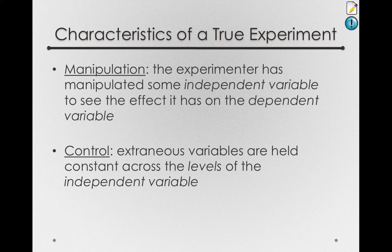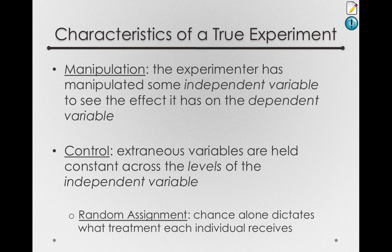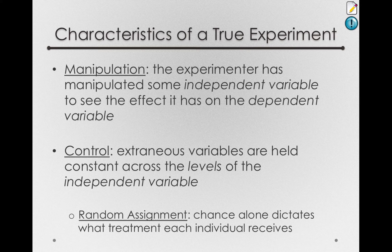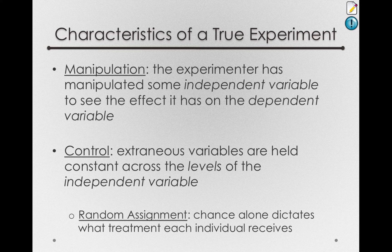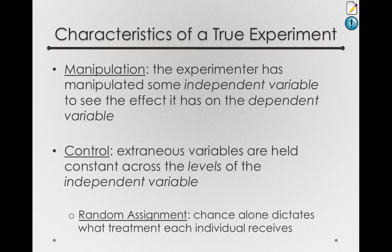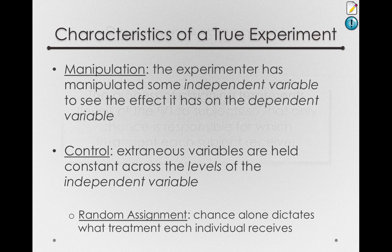For true experiments, the main way of doing this is through random assignment. Random assignment states that chance alone dictates what treatment each individual receives. This deserves its own slide because this is an incredibly important point in the characteristics of a true experiment.